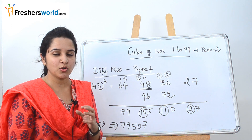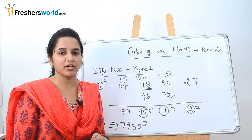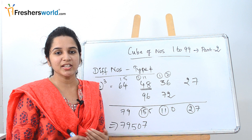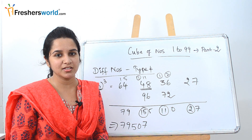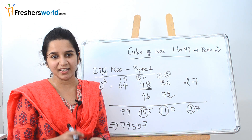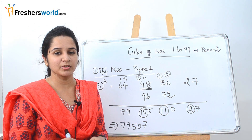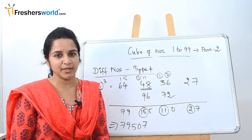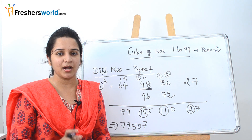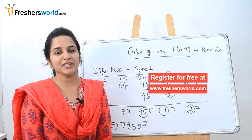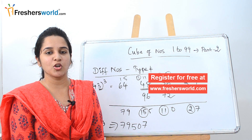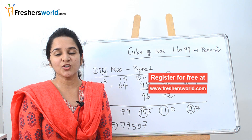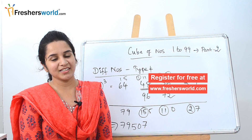The first time you solve these four types, you might find this method difficult. But once you get started, it will be very easy, and within seconds you can solve cubes of numbers from 1 to 99 — if you are thorough with all four types from Part 1 and Part 2. If you are looking for a job, kindly register at freshersworld.com. Like this video, subscribe to our channel. Thank you.